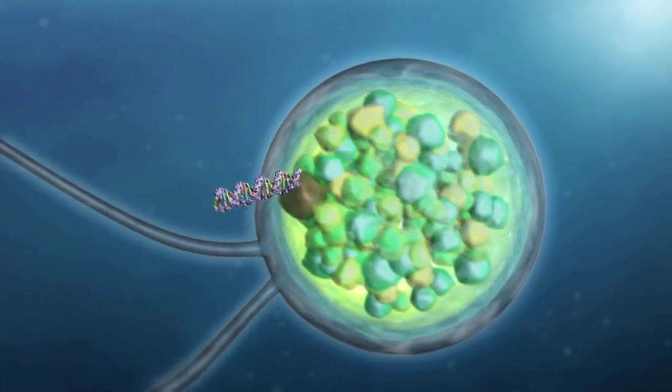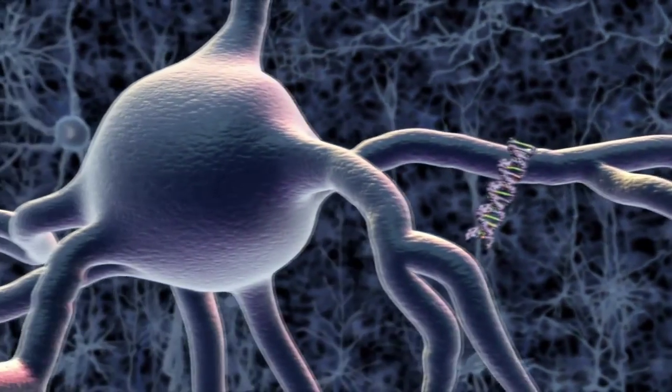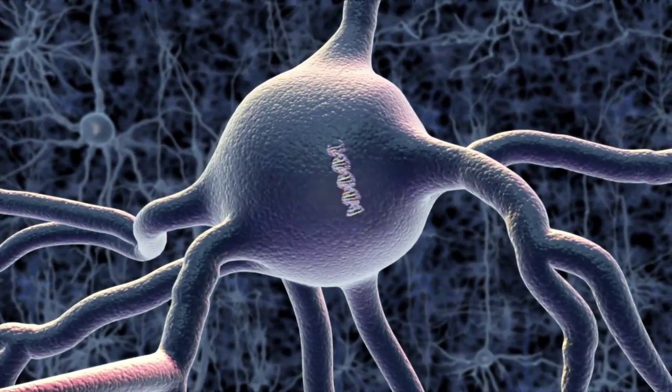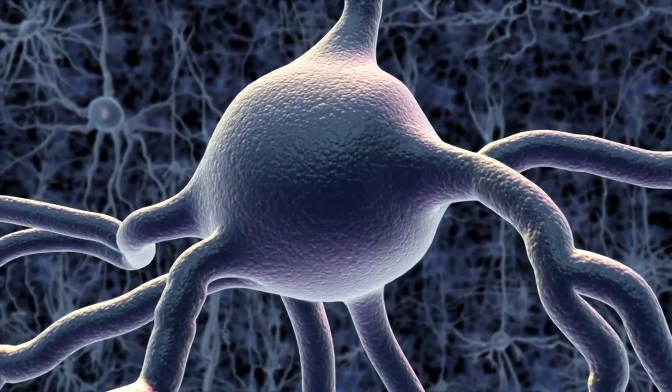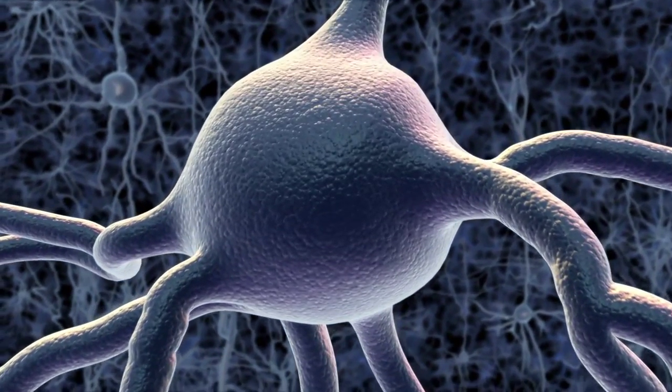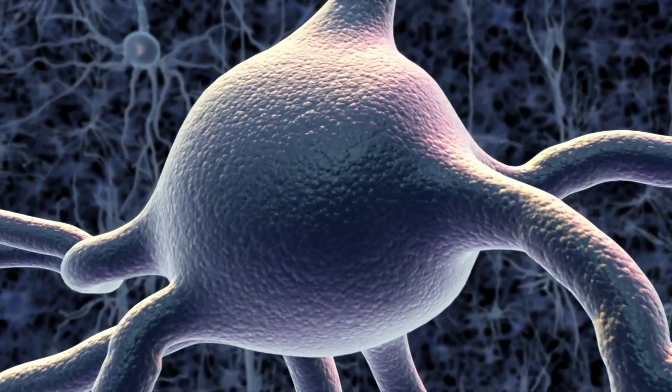So, researchers took a piece of DNA that encodes for the channelrhodopsin protein. Then, they put it into neurons, using a safe and effective method for delivering a gene, the same kind being used in human gene therapy trials.